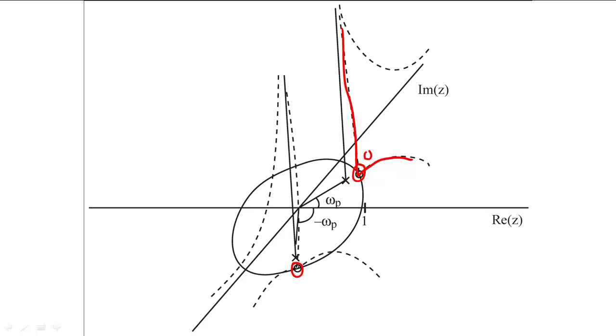Therefore, from this plot, we know that the magnitude of the frequency response will be zero at negative omega p and omega p. We can also guess that the magnitude of the frequency response will be greater at frequencies that are far away from the zeros.